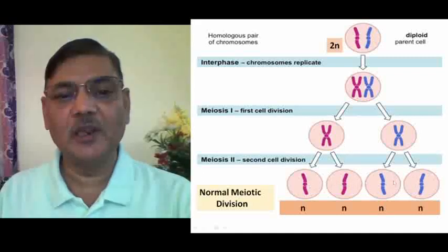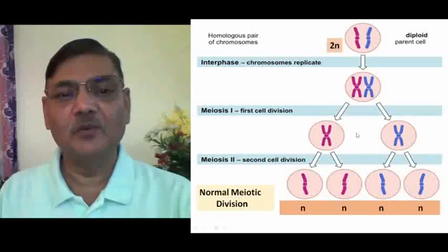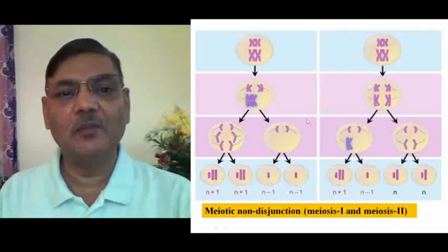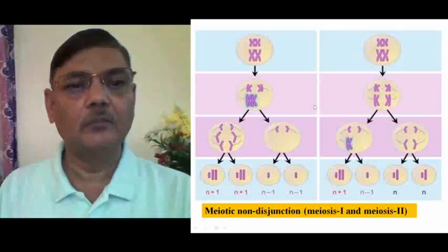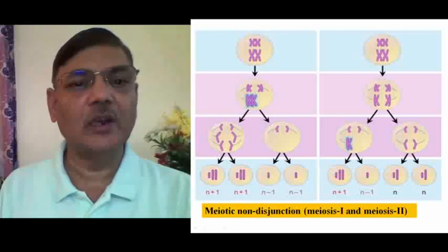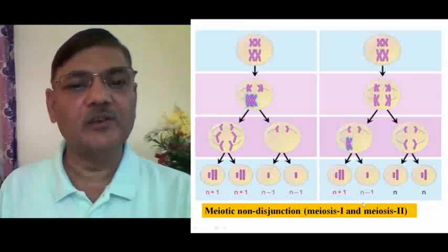Because of chromosome non-disjunction, there will be abnormal distribution of chromosomes in the daughter cells. We can understand this by seeing the next diagram, which shows exactly what happens if chromosome non-disjunction occurs in meiosis 1 or in meiosis 2.